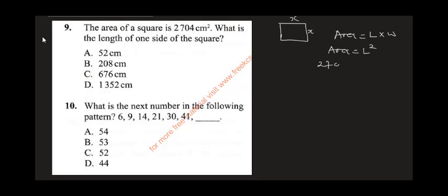So if the area is 2704, then L squared equals 2704, and therefore L is the square root of 2704. Looking at the options, the one that gives you that area is 52 cm, because 52 times 52 equals 2704. So the correct answer is A.